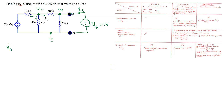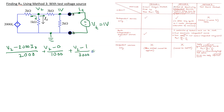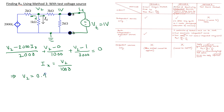Now we need to apply Kirchhoff's current law at this node and write the KCL equation. So this means (V2 minus 2000*Ix) over 2 kilo-ohm, plus V2 minus 0 over 1 kilo-ohm, plus V2 minus 1 over 3000 is equal to 0. Because the circuit has a dependent source, we need to write the dependent source constraint equation, expressing Ix in terms of node voltage. So Ix is V2 over 1 kilo-ohm. Solving these two equations gives V2 = 0.4 volts and Ix = 0.4 milliamps.